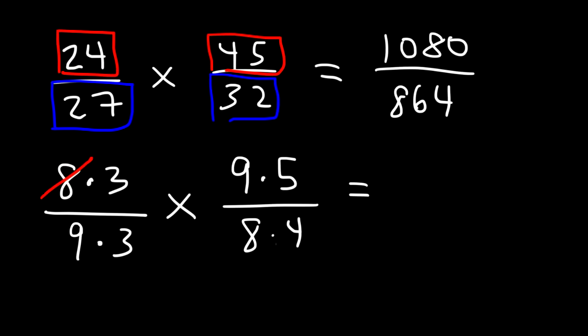So we can cancel an 8. We can cancel a 9. And we can cancel a 3. And our final answer is just going to be 5 over 4. We don't have to simplify any further than this.